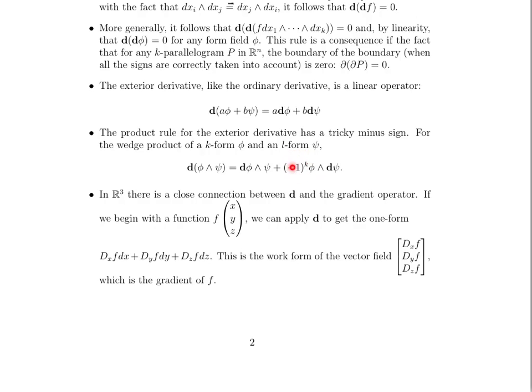In R³ there is a close connection between the exterior derivative and the gradient operator. If you begin with a function and apply the exterior derivative, you get the one-form (∂f/∂x)dx + (∂f/∂y)dy + (∂f/∂z)dz. This is the work form of the vector field where each component is a partial derivative of f — which is exactly the gradient vector field of f. Let's take a closer look at applying exterior derivatives to see exactly what kinds of vector fields, flux forms, and work forms we get.